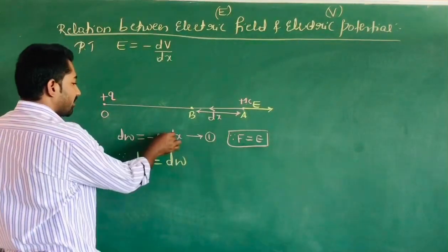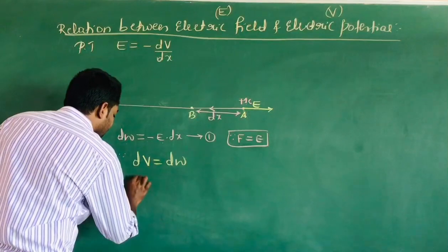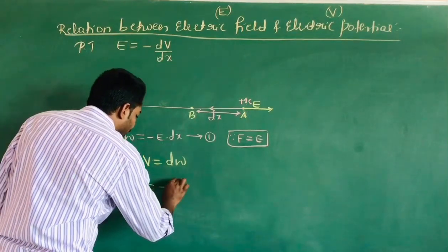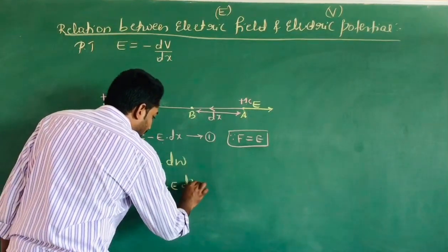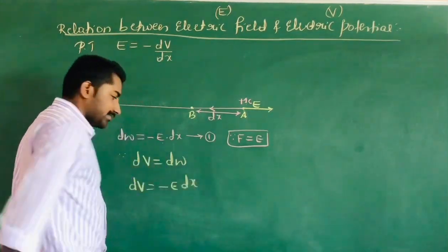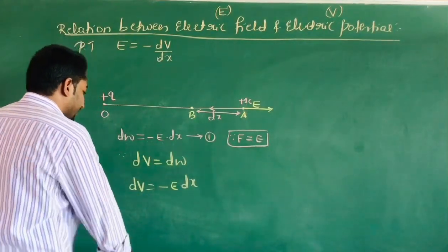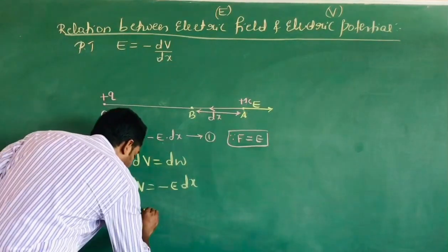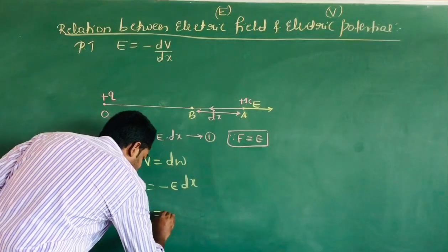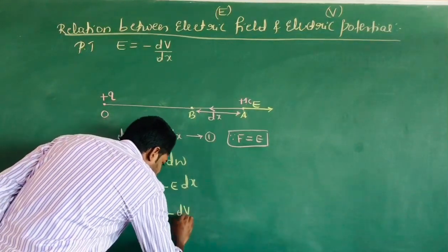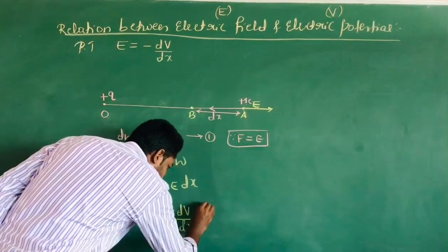Therefore equation 1 can be written as dV is equal to minus E into dx, or electric field E is equal to minus dV divided by dx.